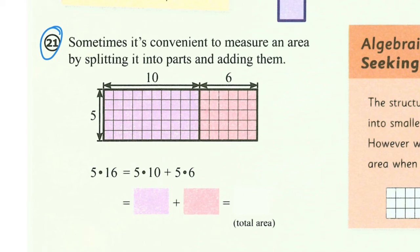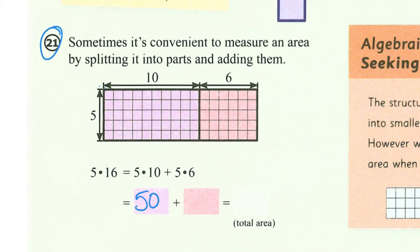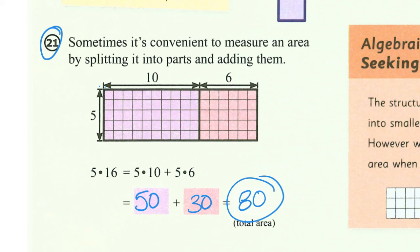We're going to move ahead to number 21, and now we're going to see our area models — we call this being split up a little bit. The length of this whole side is 16, but we're splitting it up into a part with 10 and a part with 6, because multiplying those pieces by 5 is going to be a lot easier. So 5 times 16 can be rewritten as 5 times 10 — that's going to be 50 — plus 5 times 6, which is 30. So 5 times 16 is just 50 plus 30, and we add those together to get our total area, or our answer, of 80.